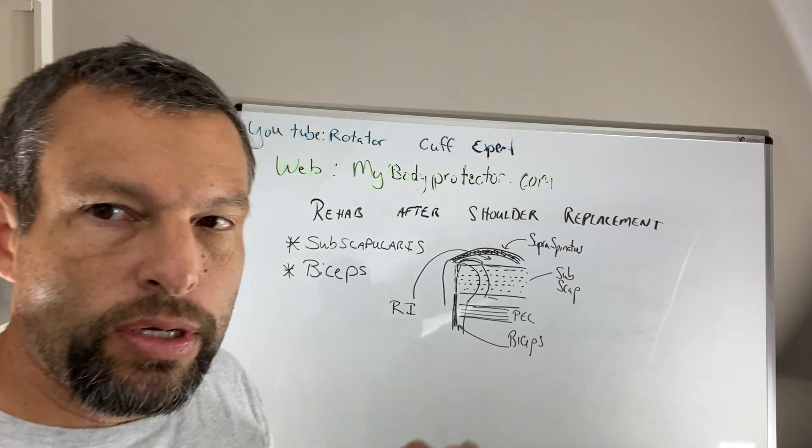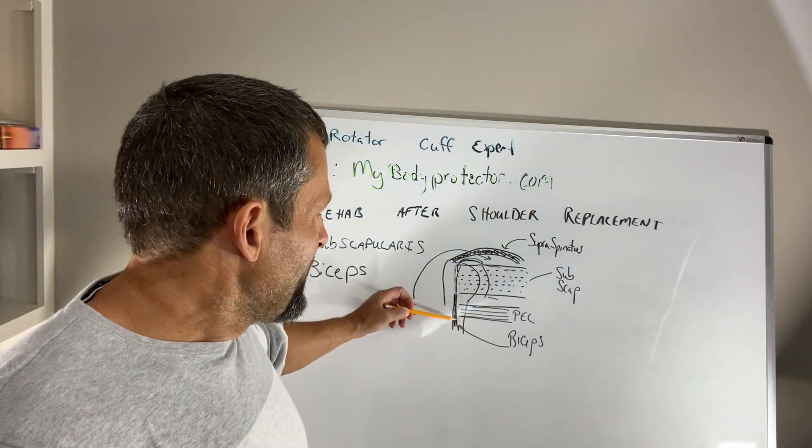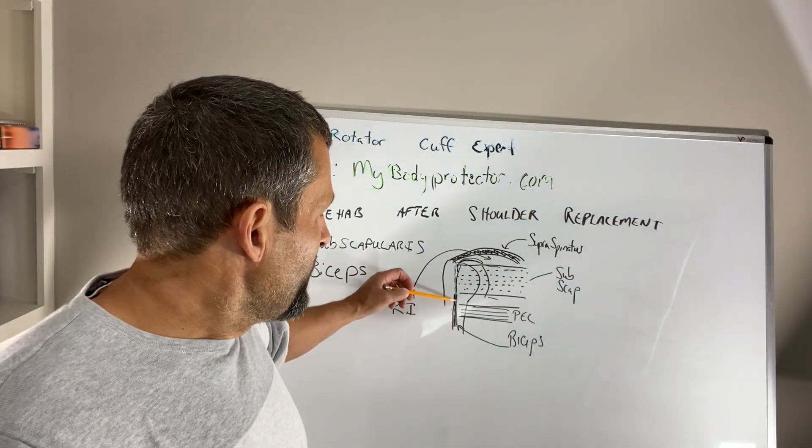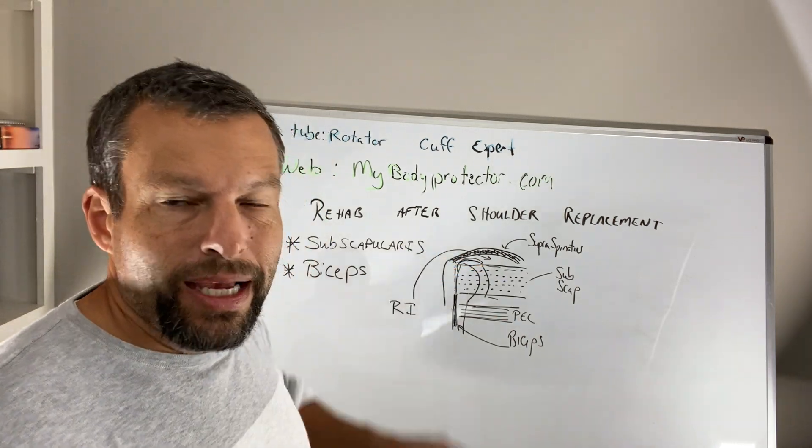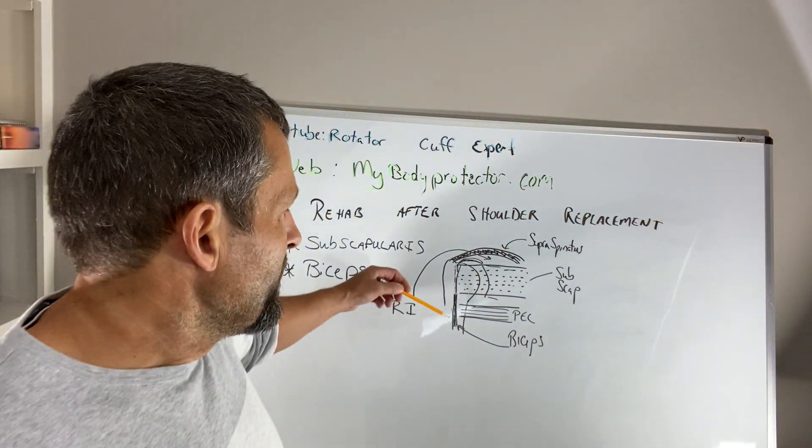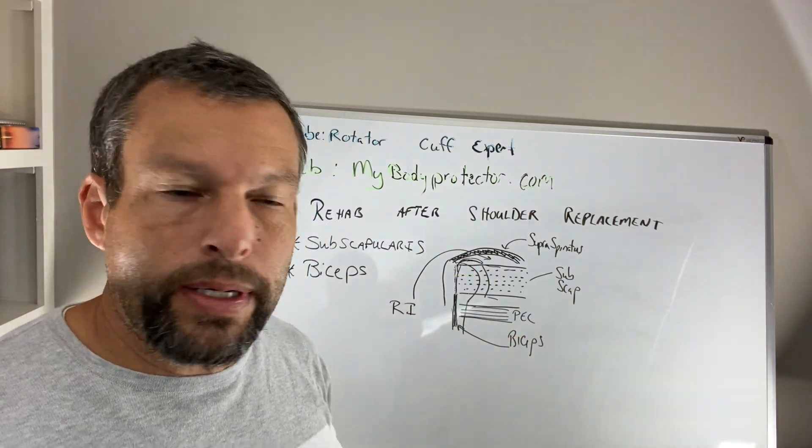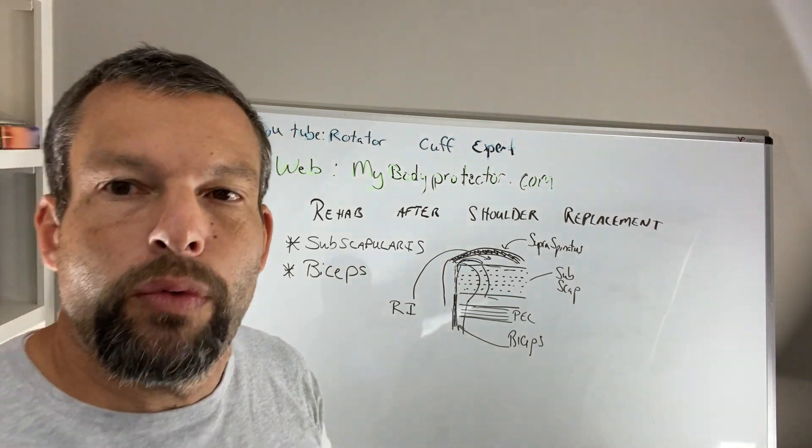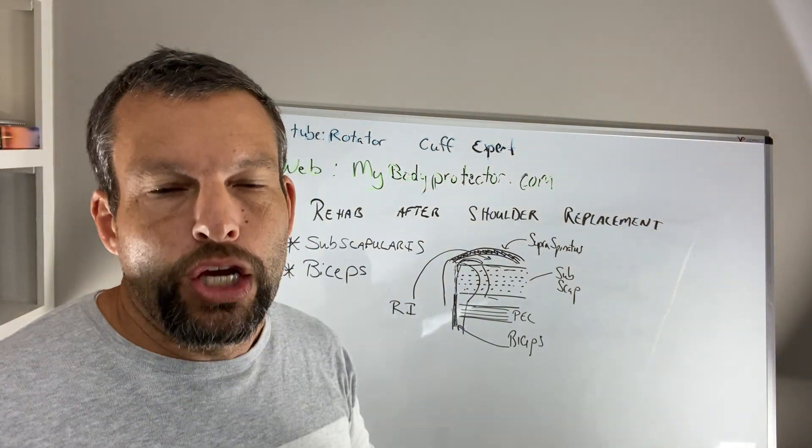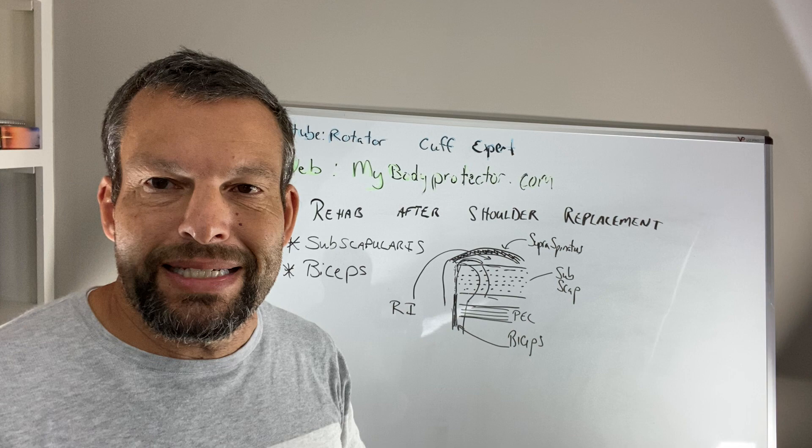The other thing you need to know about is the biceps. The biceps is here and actually comes up and goes in between those two and attached at the top of the socket. That's the long head of the biceps. Another head of the biceps goes over here, which is not particularly important. So we most always, when we do a shoulder replacement, we do a biceps tenodesis.